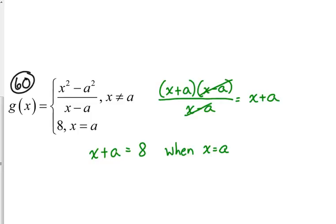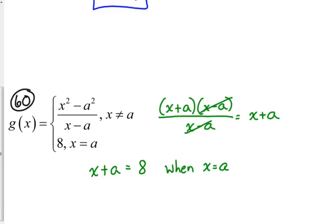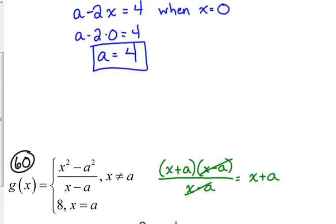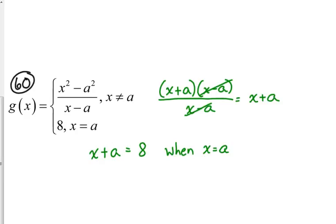X can be anything. Just like we just plugged in 0 for x in the last problem, this time we're going to plug in a for x. 2a is equal to 8. So a is equal to 4. So 4 in this case, again, is the answer.